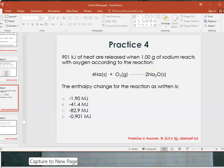...you started out by doing 901 kilojoules divided by 4, which would imply that 901 kilojoules of heat are released when four moles of sodium are burned, or react with oxygen.